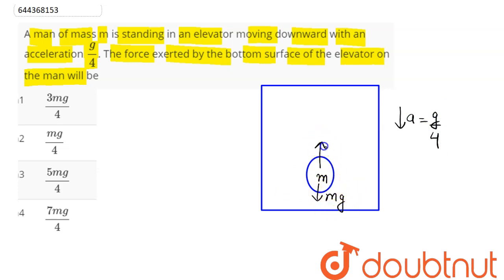Next here, this is the normal which is the force exerted by bottom surface of elevator on the man which is being asked in the question. Next, we can say here since elevator is accelerating downward and pseudo force will act upward which is ma.